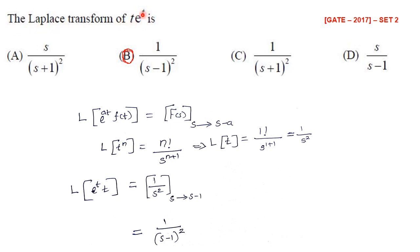The next question is the Laplace transform of t·e^t — a GATE 2017 Set 2 Mechanical Engineering question with four options. The Laplace transform of e^{at}·f(t) is F(s) with s replaced by s minus a. Since here the exponent is e^{+t}, we replace s by s minus a. The Laplace transform of t^n is n! divided by s^{n+1}, so the Laplace transform of t is 1 factorial divided by s², which equals 1/s².